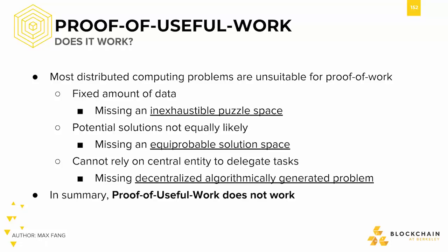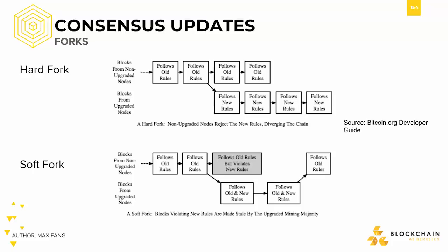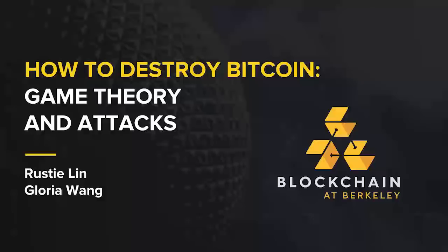We took a look at the various ways in which changes are pushed through the Bitcoin system. We looked at Bitcoin Core, the team of developers in charge of the main Bitcoin repo. We took a look at hard forks and soft forks, how these are used in order to update the blockchain. And finally, BIPs, used to make proposals within the community.